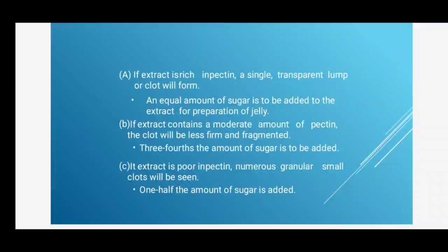If a single transparent lump forms, add an equal amount of sugar to the extract for jelly preparation — pectin content decides how much sugar to add. If the extract contains a moderate amount of pectin, the clot will be less firm and fragmented, and three-fourths the amount of sugar relative to extract should be added. If the extract is poor in pectin, numerous small granular clots will be seen, and only one-half the amount of sugar relative to extract should be added.